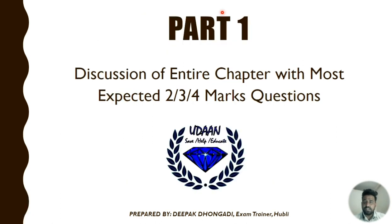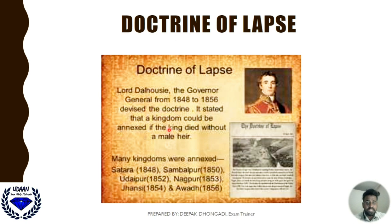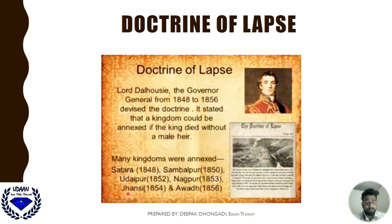The first war of Indian independence begins with the main cause — the doctrine of lapse. This was introduced by Lord Dalhousie, who was the governor general from 1848 to 1856. He stated that a kingdom could be annexed if the king died without a male heir, and even an adopted child cannot become king. This is the main political cause for the first war of Indian independence.